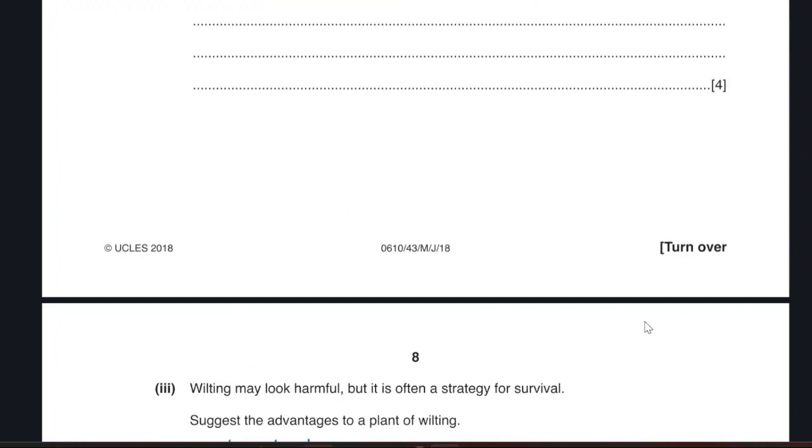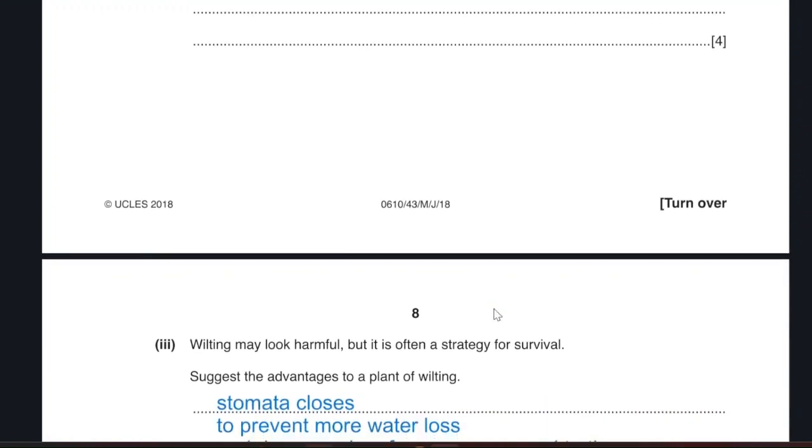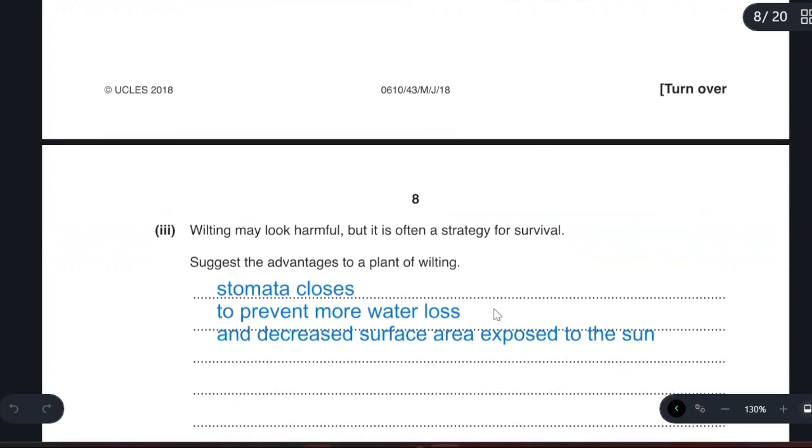Wilting may look harmful, but it is often a strategy for survival. Suggest the advantages for wilting. Sometimes wilting has an advantage because it allows the stomata to close to prevent more water loss, decreases the surface area exposed to the sun, so we will decrease further water loss to keep the amount of water in the plant as much as possible.